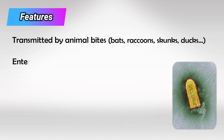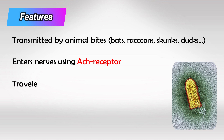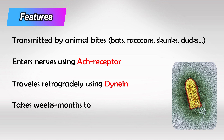Once the virus enters the body, it uses a nerve to travel all the way up to the brain. Specifically, it will bind to the nerve using the receptor Acetylcholine, and it will travel up the nerve using the motor protein Dynein. This can take a very long time, so in a way it's an incubation period — often it will take weeks or even months.